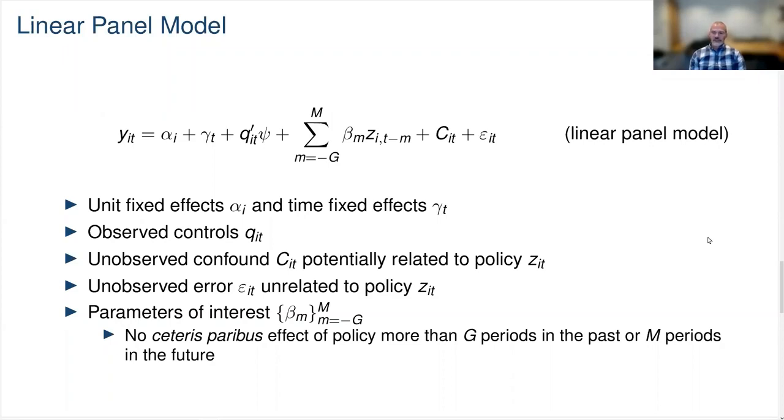It's clear that policy effects are not going to be identified without substantive restrictions on this confounding variable. Different restrictions on the confound will lead to different identification strategies and different estimators. The motivation behind putting different restrictions on the confound will come from different assumptions about the economic problem at hand.